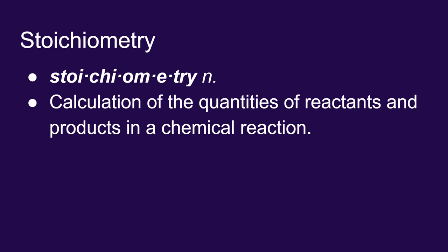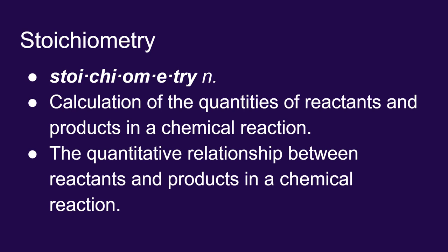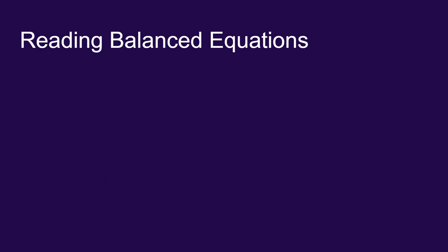Stoichiometry is the ability to make predictions based on the quantities of reactants or products in a reaction. We use the relationships between the amounts of reactants and the amounts of products in a balanced chemical reaction. Before we do stoichiometry, we have to make sure we're able to read a balanced chemical equation.